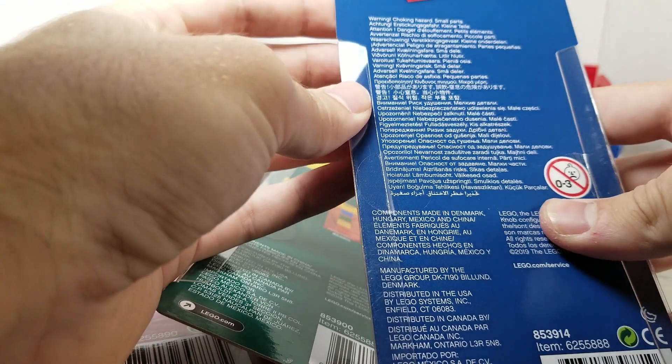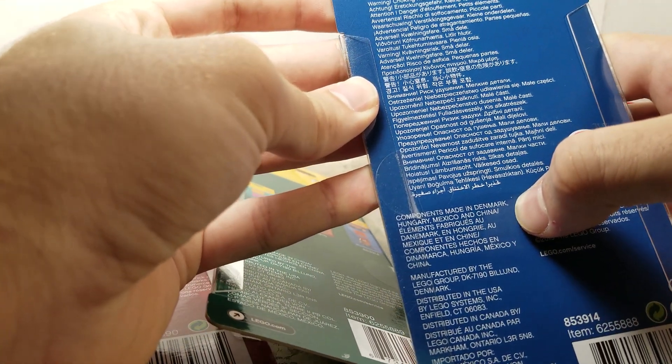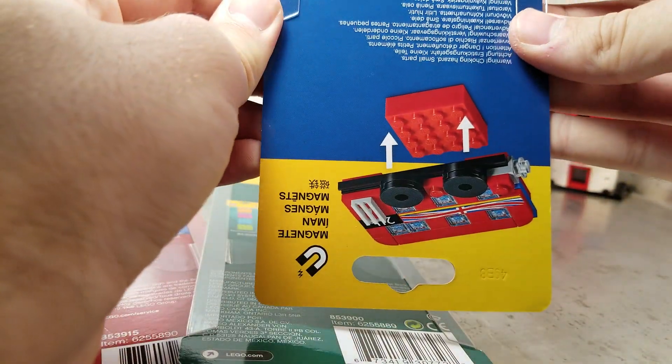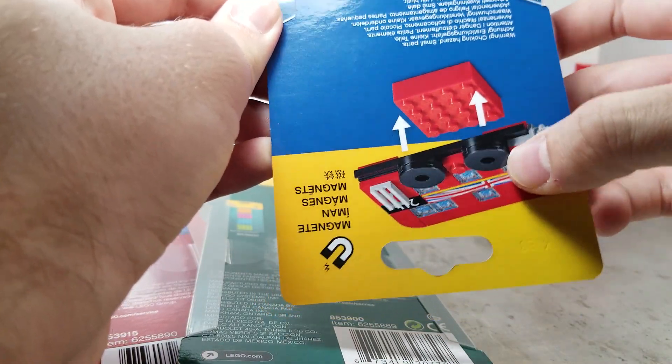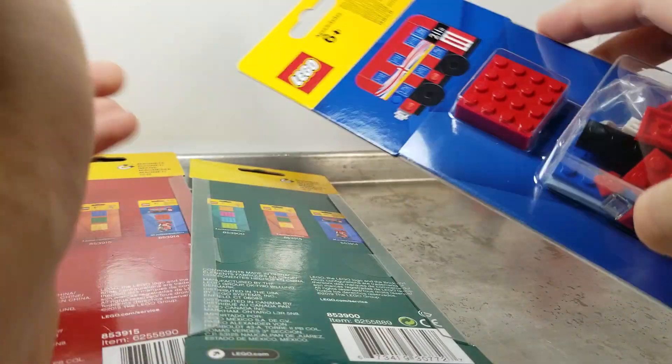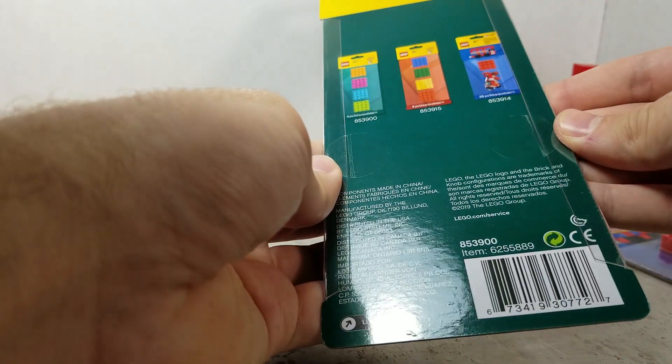This one on the fun side says components made in Denmark, Hungary, Mexico, and China. So the usual locations. It also shows you can stick the bus onto the magnet and then use it like a fridge magnet. It's on a red one, which should be identical to the other red one. So let's get into it.